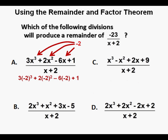And that will give us this, 3 times negative 2 cubed plus 2 times negative 2 squared minus 6 times negative 2 plus 1.